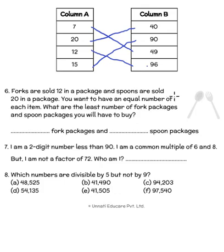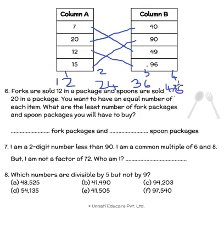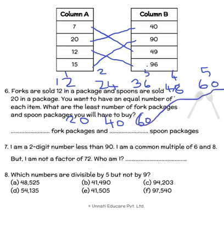Since the common multiple is 60, we need to buy 5 fork packages — because 12 multiplied by 5 is 60 — and 3 spoon packages, because 20 multiplied by 3 is 60. So the answer is 5 fork packages and 3 spoon packages.